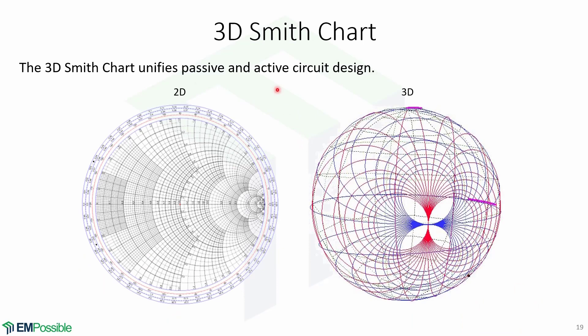There is another way of visualizing things with a 3D Smith chart. In this Smith chart, you no longer walk across a flat circle, but you walk along the surface of the Smith chart.